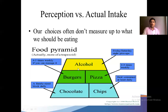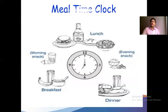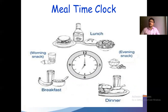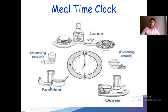The meal time clock is very important. We should have three main meals — breakfast, lunch, and dinner — with healthy snacks in between. Avoid chocolates, high-calorie cookies, biscuits, and namkeens as snacks. Maintain fixed meal times every day. Breakfast should be king-sized and healthy. Lunch should be a smaller portion, and dinner should be the lightest meal.